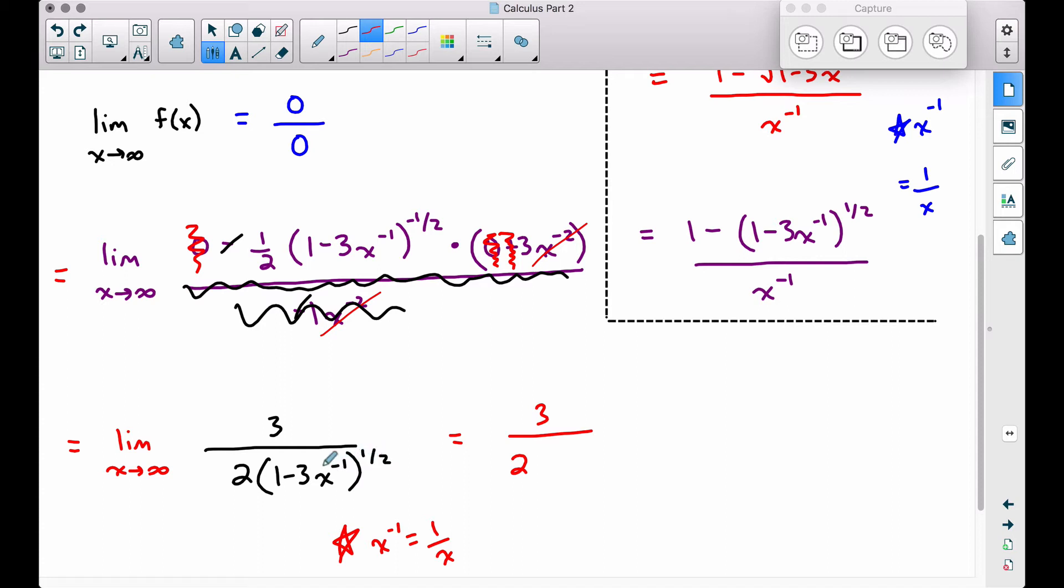And the square root of 1, because we have 1 minus 0, that's 1, to the 1 half power. We're really taking the square root of that. And the square root of 1 is 1. Therefore, all of that stuff right here, 1 minus 3 times x to the negative 1, all to the 1 half power is 1. And now we can evaluate this limit, and we get 3 halves.